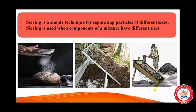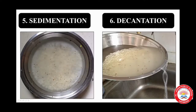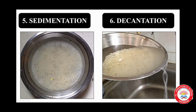The next processes are sedimentation and decantation. Sometimes it may not be possible to separate components of a mixture by winnowing or hand picking — for example, lighter impurities like dust or soil particles in rice or pulses. When you add water to rice or pulses, the impurities like dust and soil particles get separated, and the heavier rice settles at the bottom. This process is called sedimentation.